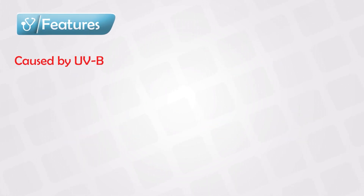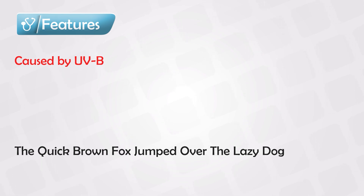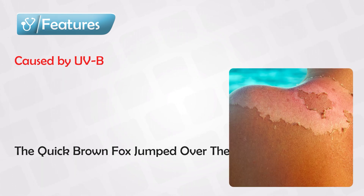Sunburns are caused by UV radiation. These radiations are caused by, of course, the sun. There are two types of UV radiation: either the synthetic type that we use in tanning, known as UVA, or the natural type, known as UVB, that comes from the sun.